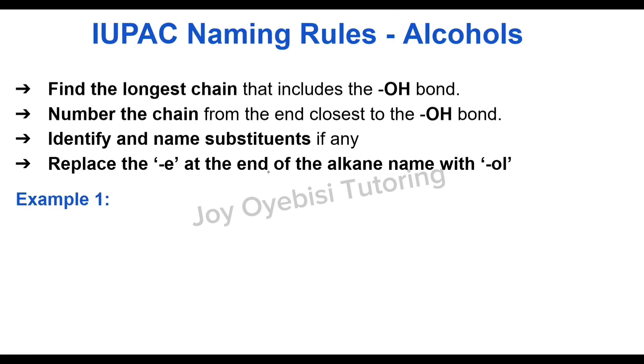So for alcohols, the first thing you do is find the longest continuous chain that contains the OH bond. Number the chain from the end that is closest to the OH bond, and then identify and name substituents, if any.